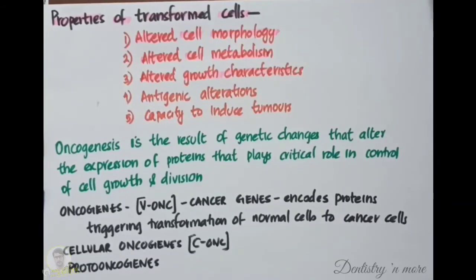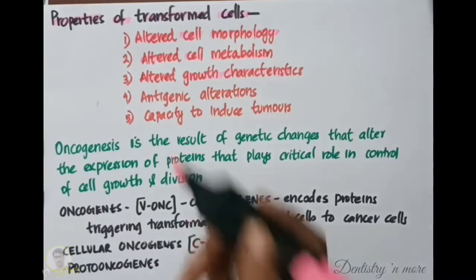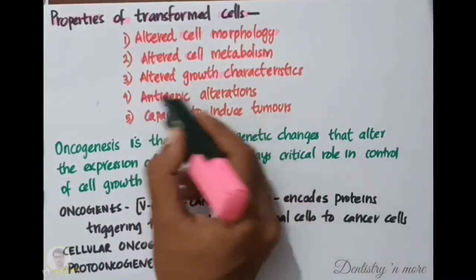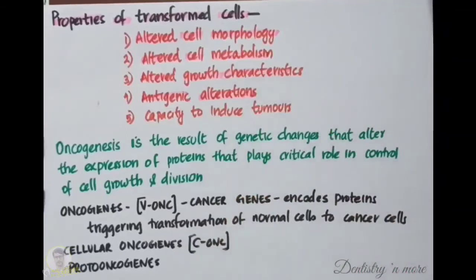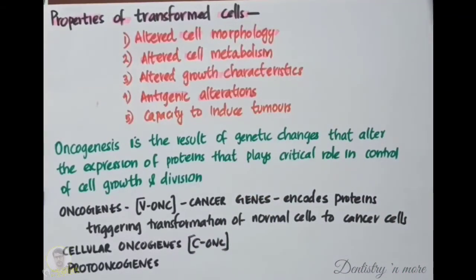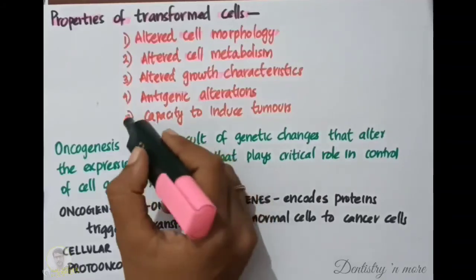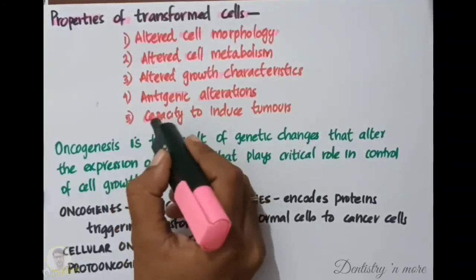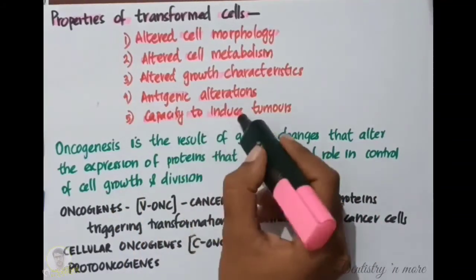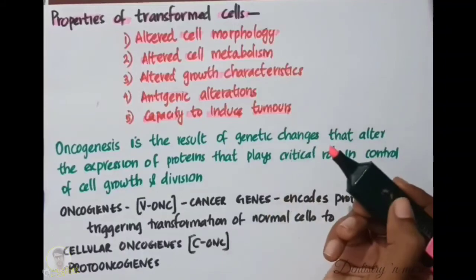Additional properties include the capacity to divide indefinitely in serial culture, the capacity to grow in suspension or in semi-solid agar. Fourth, antigenic alterations: appearance of new virus-specified antigens like T antigen, loss of surface antigens, and cells become agglutinable by lectins. Fifth, capacity to induce tumors in susceptible animals.